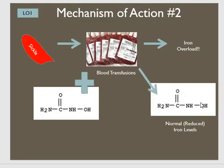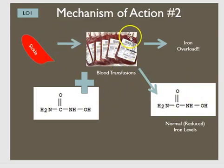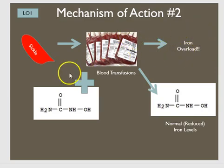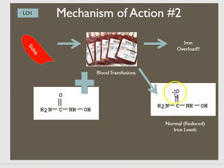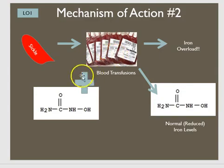For the second mechanism of action: sickle cell patients often require blood transfusions, and the clinical outcome is iron overload. When hydroxyurea is added to these blood transfusion regimens, the result is reduced or normalized iron levels, because all the extra iron from the transfusion is chelated and absorbed by the hydroxyurea compound.